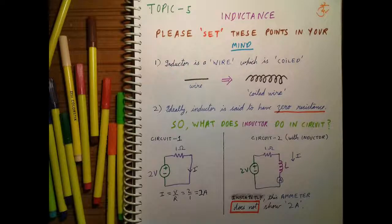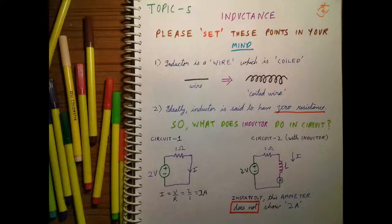A current of 2 amperes will flow, but it will take some time to reach 2 amperes. So what is the role of the inductor? It is opposing the change in current. Before the circuit was completed, the current was zero. At the instant the ammeter is connected, the current should have been 2 amperes but it is not — it takes time. The inductor opposes the change in current, not the current itself.